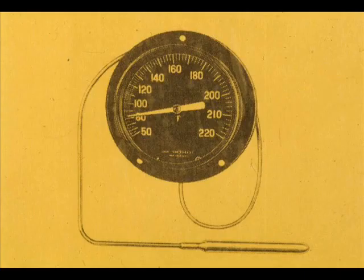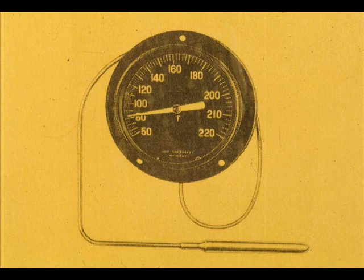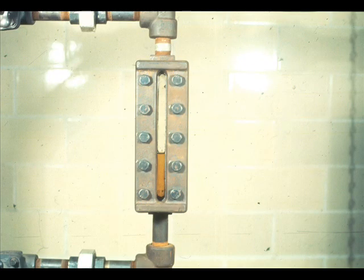We discussed the bulb thermometer, and how it operated on the expansion of a liquid instead of a metal. And we looked at some of the level-sensing devices, the simplest of which is the gauge glass.